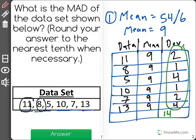And there are six data points, so 14 divided by 6. When I solve that, I get 2.33, but it says to round to the nearest tenth, so the mean absolute deviation, the MAD of this data set is 2.3.